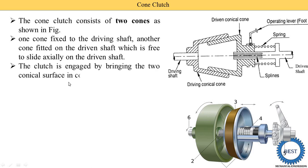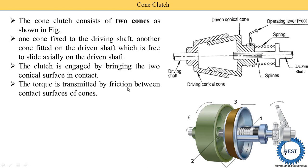The clutch is engaged by bringing the conical surfaces into contact. When the clutch is in the engaged position, both cones are in contact, so torque is transmitted from the driving shaft to the driven shaft. The torque is transmitted by friction between the contact surfaces of the cones. When they are in contact, due to friction, torque is transmitted — that is why its name is given the friction clutch.